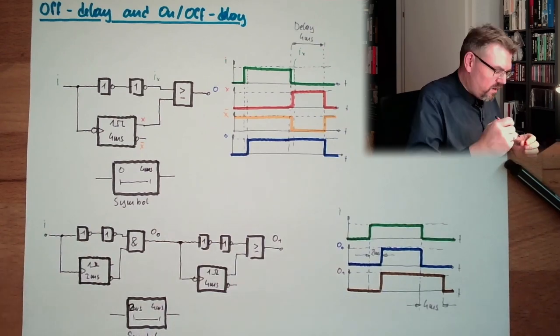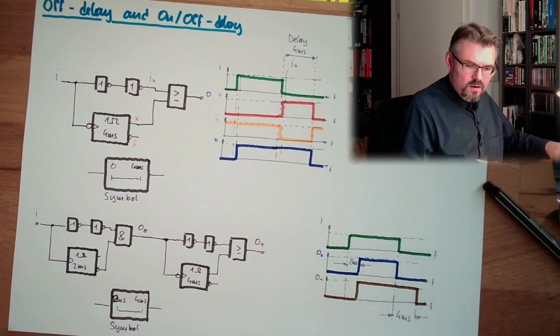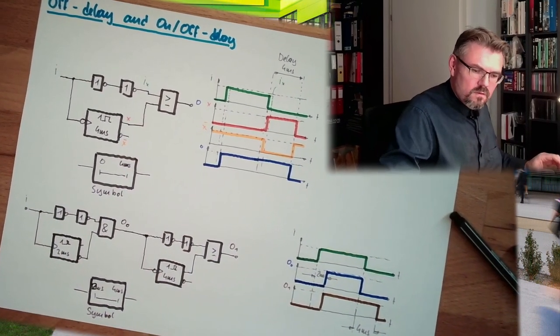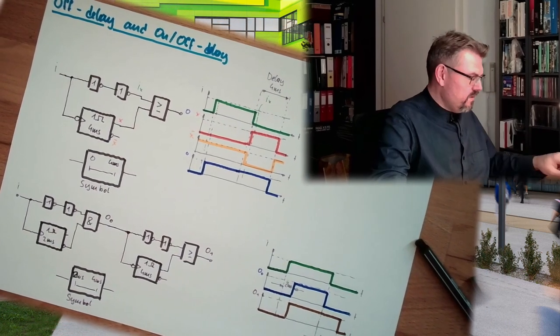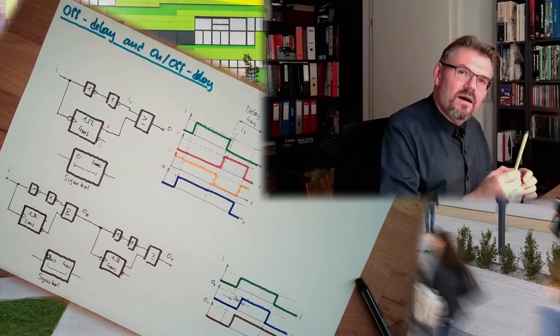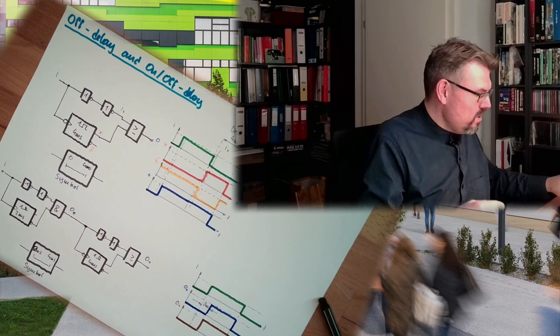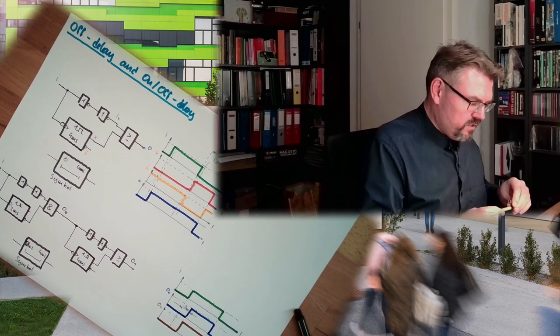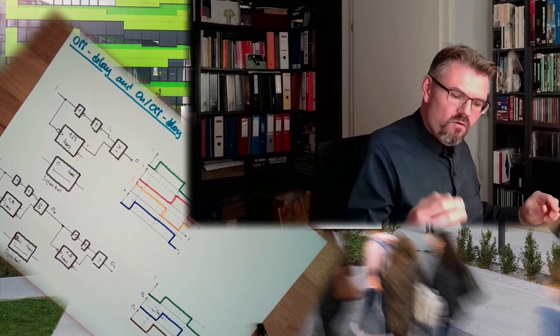So, this is how you can realize, with the same monostable time element, you can realize different functions. So, we have now ON delay, OFF delay, we can really manage timing in our logic circuits, alright? So, that's it for digital timers.